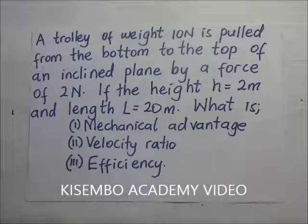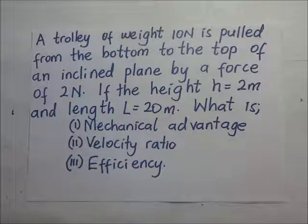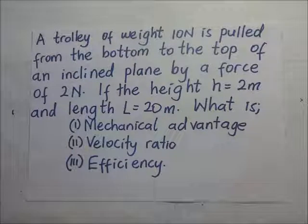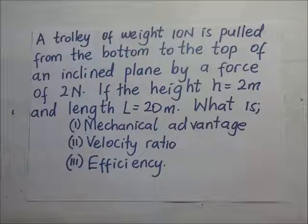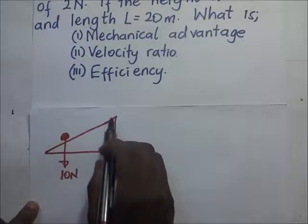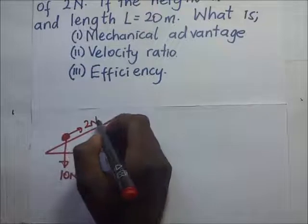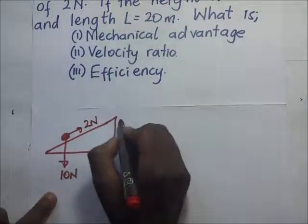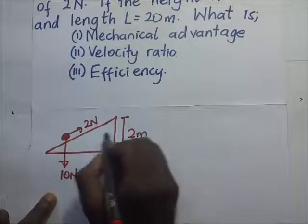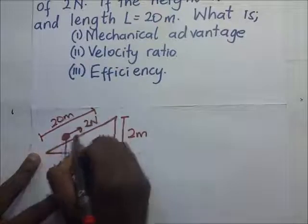A trolley of weight 10 newtons is pulled from the bottom to the top of an inclined plane by a force of 2 newtons. The height H is 2 meters and the length along the inclined plane is 20 meters. We will draw a simple sketch to illustrate this question. The trolley has a weight of 10 newtons and is pulled by a force of 2 newtons.